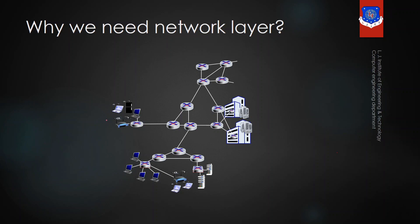As you can see on the screen, there are different local area networks connected to each other using routers. Suppose device A wants to send data to another device B in the same network — it can send data using the physical address. But suppose device A wants to send data to device C in another network.